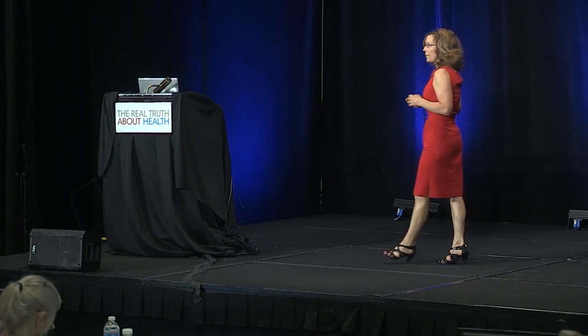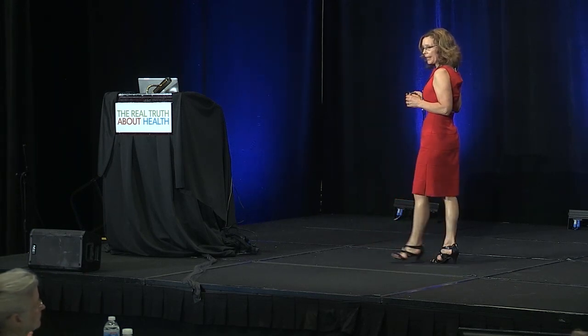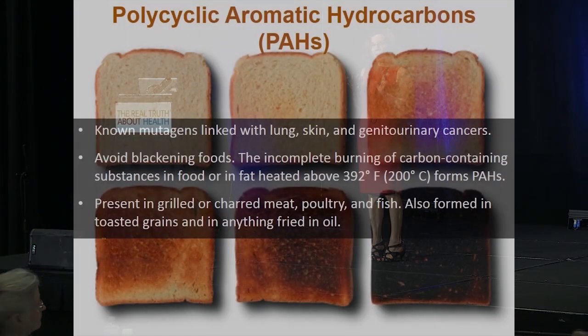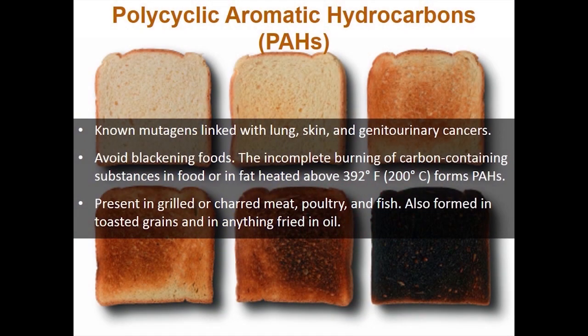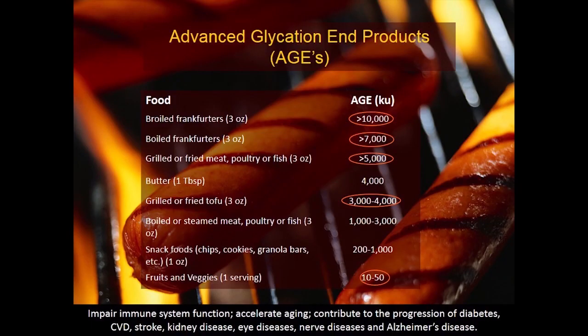Polycyclic aromatic hydrocarbons (PAHs) are known mutagens linked to lung, skin, and genitourinary cancers. They are formed when foods are blackened — and it doesn't matter if it's a plant food or not. Any food heated above 392°F can form PAHs — grilled or charred meat, poultry, fish, but also grains or anything fried in oil like french fries.